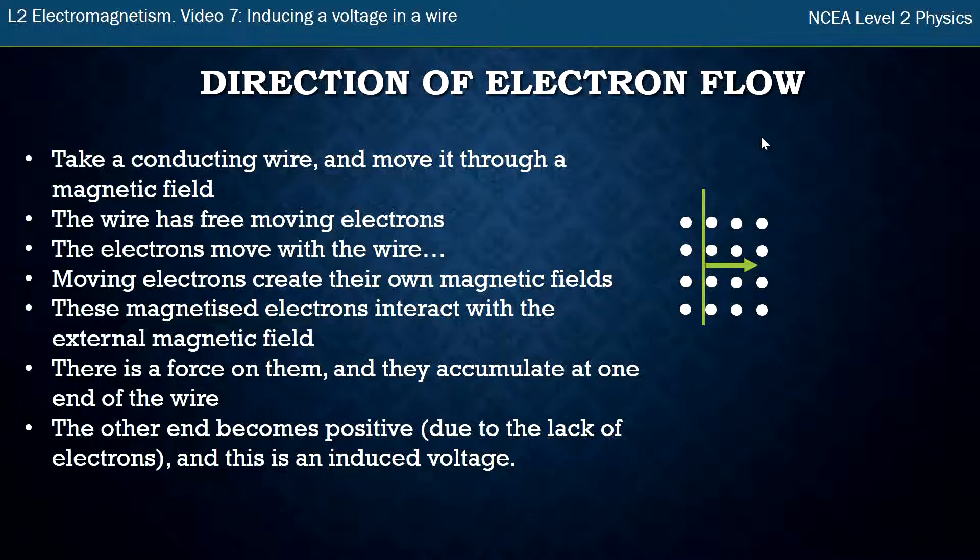Now the first thing we're going to talk about is the direction, which way it will go. So I'm just going to go through this explanation and run through it using my left hand to work out which way things go. So I've got my conducting wire. The wire has free moving electrons and the electrons move with the wire. They move to the right.